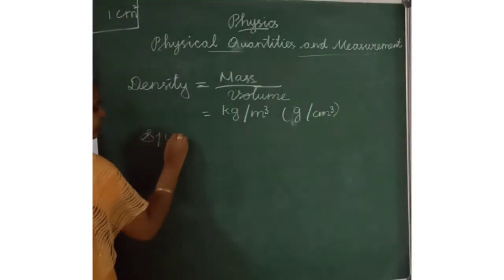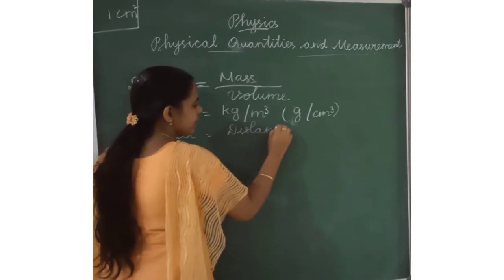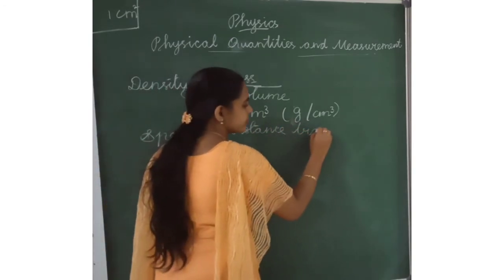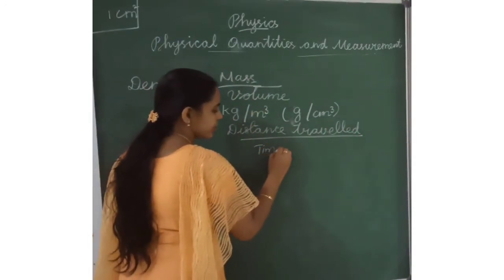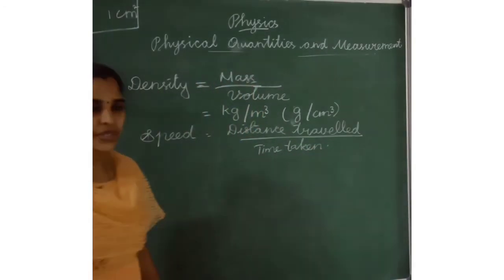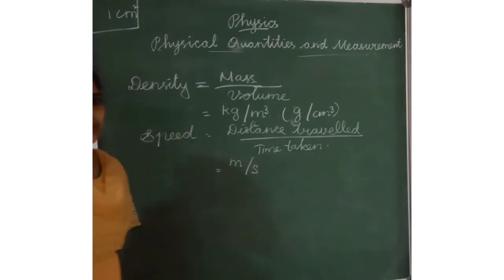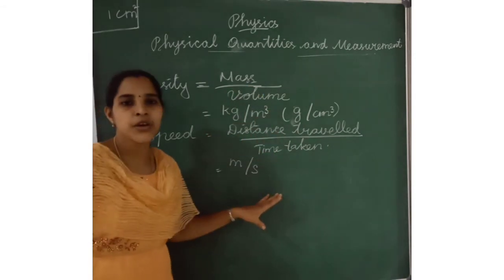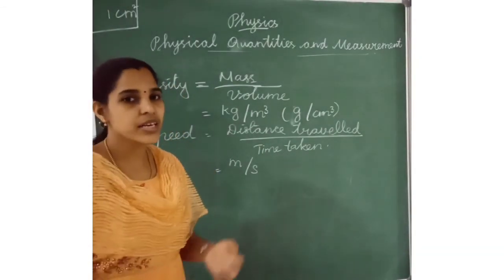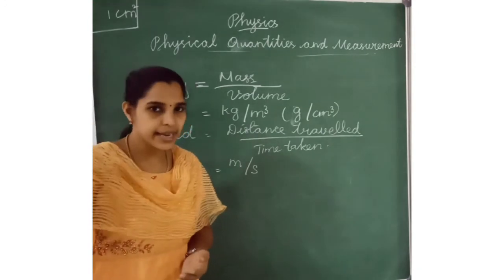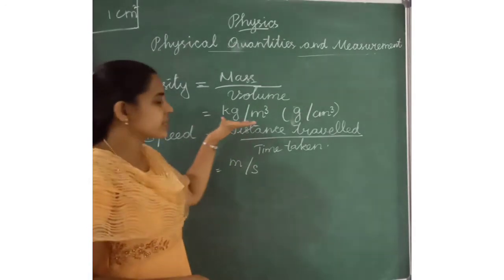Next is speed. Speed equals distance travelled divided by time taken. The unit of speed is meter per second. These are the important formulas. Numerical questions using these formulas are very important for higher classes, so don't omit them. Shall we look at some examples?